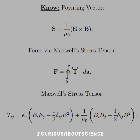In index notation, T_IJ equals epsilon-naught times (E_I E_J minus one-half delta_IJ E-squared) plus (1/mu-naught)(B_I B_J minus one-half delta_IJ B-squared). Notice this looks really familiar to the energy expression, which had one-half epsilon E-squared plus one-half times (1/mu) B-squared — except now we have to consider every direction because we're dealing with force.